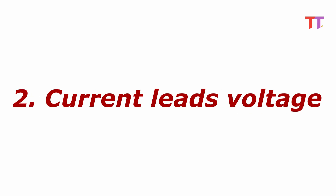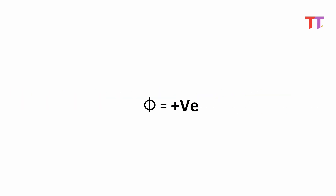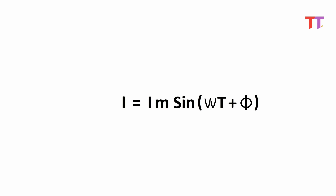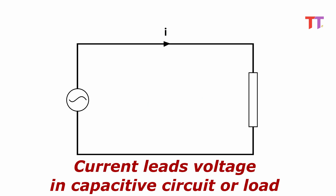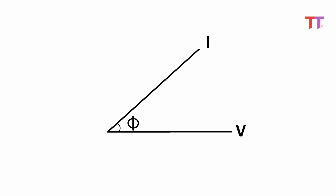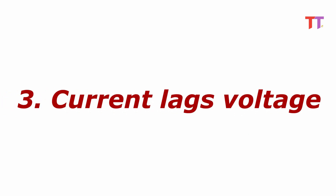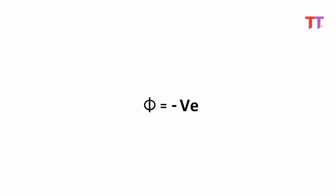This is how the phasor diagram looks like for current in phase with voltage. Case two: current leads voltage. This means phi is positive. Hence the equation of current is i equals Im sin(omega t + phi). Current leads voltage in a capacitive circuit or load. This is how the phasor diagram looks like for current leading voltage.